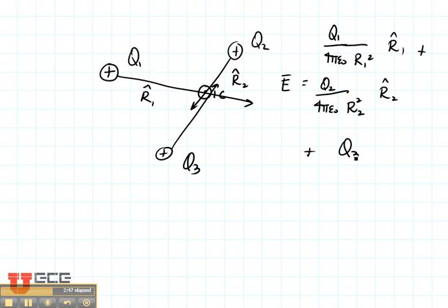And then let's add in a third, plus q3 over 4 pi epsilon naught r3 squared in the direction r3. We call this superposition.